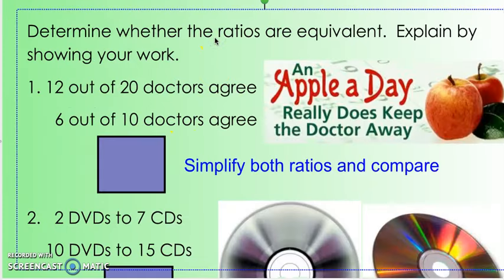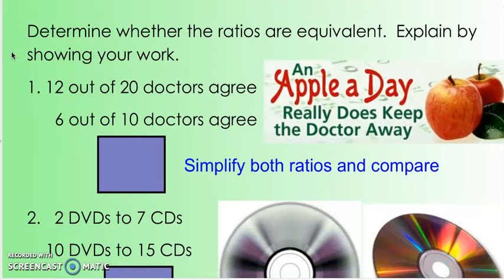Let's look at another one. Determine whether the ratios are equivalent, and we need to explain by showing our work. So let's look at 12 out of 20 doctors agree, 6 out of 10 doctors agree. Now notice the wording. Out of means that this was the total number of doctors. So it doesn't have the word TO in it, it's a different phrase. But we're still comparing doctors to doctors, we're just comparing a part of doctors to the whole amount of doctors. And so we can actually write this ratio in fraction form. And so we could do 12 out of 20, and then the other ratio would be 6 out of 10.